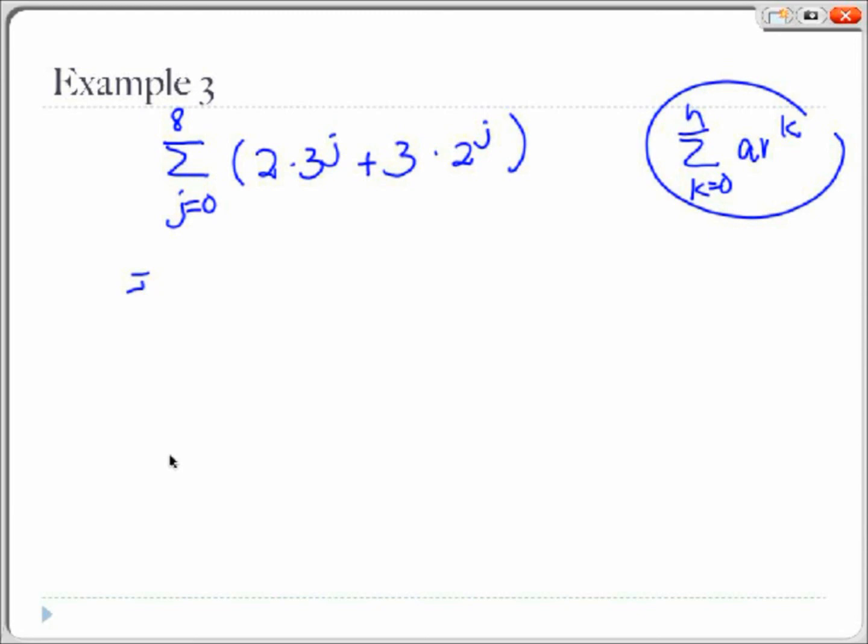With summations, you can separate addition and subtraction. So we are going to have two different sums now. Summation from j equals 0 to 8, 2 times 3 to the j plus the summation of j equals 0 to 8 of 3 times 2 to the j.